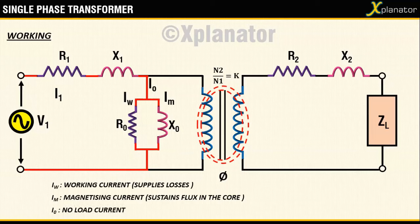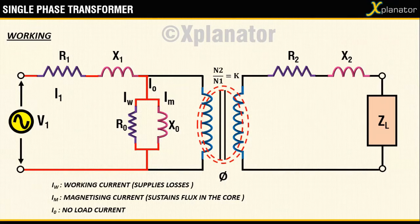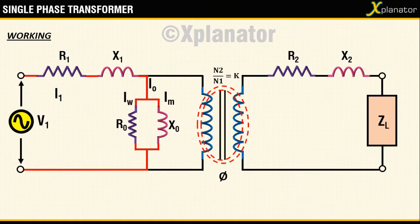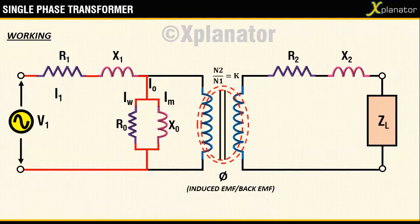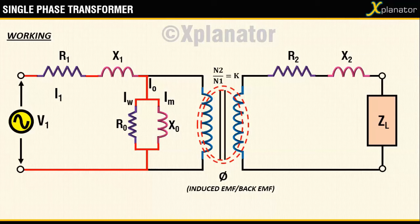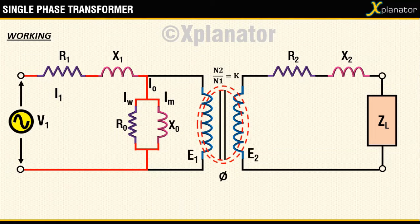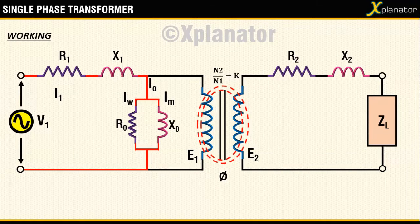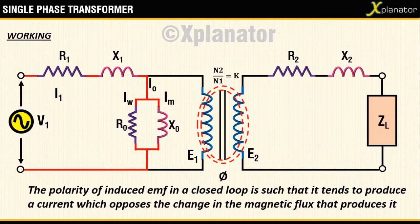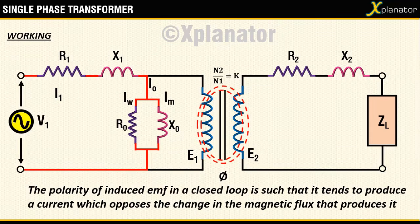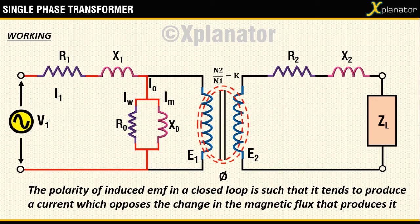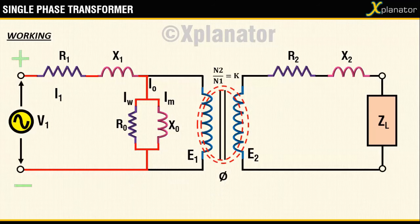The flux phi in the core setup due to the alternating current is also alternating in nature. This changing flux sets up induced emf also called as back emf in the coils. Emf in coil 1 is E1 and that in coil 2 is E2. According to Lenz's law, the polarity of induced emf in a closed loop is such that it tends to produce a current which opposes the change in the magnetic flux that produces it. So if V1 is plus minus then E1 and E2 will be plus minus.